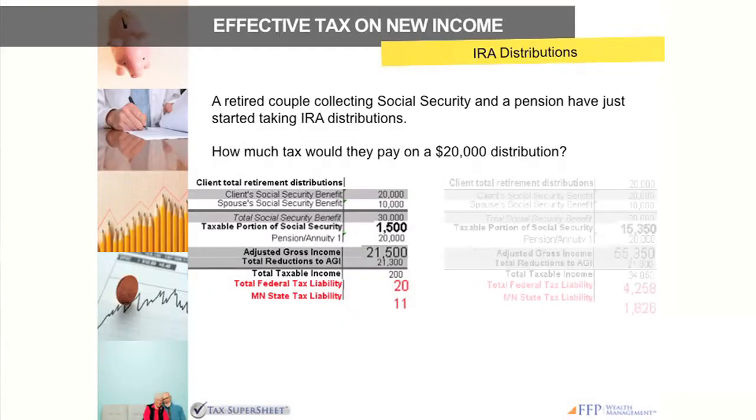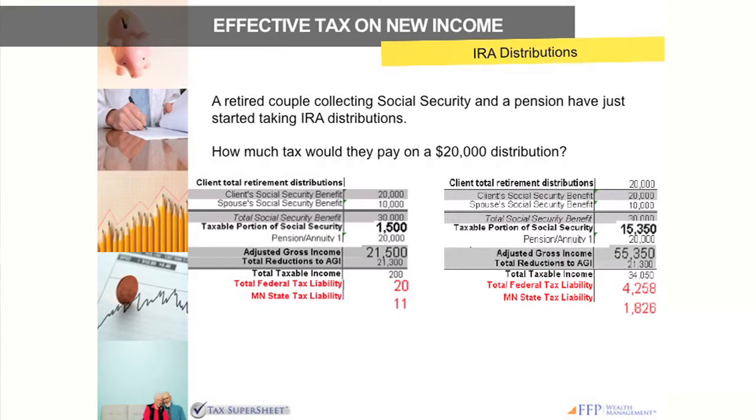Once we've distributed the twenty thousand, that provisional income test — that few people can figure out how to calculate — says you also have to pay tax now on fifteen thousand dollars of your Social Security that wasn't taxable before.